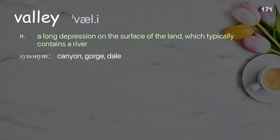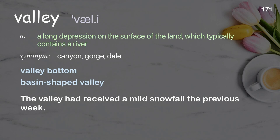Valley: a long depression on the surface of the land, which typically contains a river. Examples: valley bottom; basin-shaped valley. The valley had received a mild snowfall the previous week.